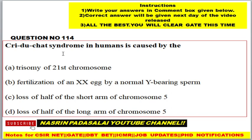Question number 114: Cri-du-chat syndrome in humans is caused by — Options: A) Trisomy of the 21st chromosome, B) Fertilization of an excess X by a normal Y-bearing chromosome, C) Loss of half of the short arm of chromosome 5, D) Loss of half of the long arm of chromosome 5.